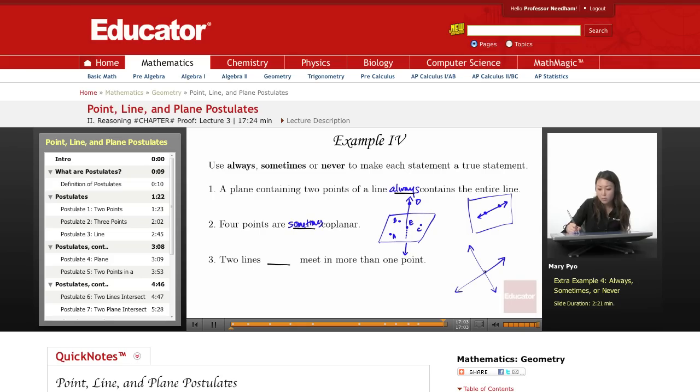This, always one point. Can they meet in more than one point? No. So this one is never. They can never meet in more than one point. They always have to meet at one point.